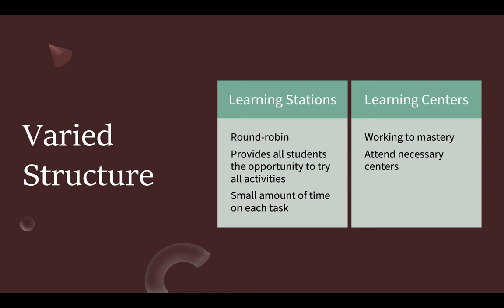Learning stations operate in a round robin manner, providing all the students with the opportunity to try each activity. In learning centers, students work continuously on one activity until they master it. The focus for learning centers is to master a specific area of study or subject, whereas in learning stations the focus is to spend a small amount of time doing many tasks.